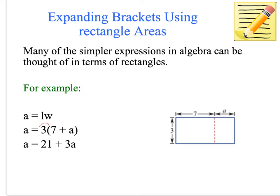So 3(7 + a) would be what we write, and then we expand the brackets, which means removing them. 3 times 7 is 21, 3 times a is 3a. It's as easy as that.